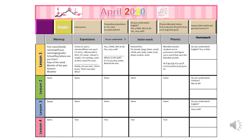At the top I have goals: expressions, prepositions or positions — in, on, next to, under, behind. Do you understand English? Yes, a little. Not at all. Yes, very well. Phonics blended letters: FL, SN, CR, QU, SL, TR, SH, SP, TH, CH, DR, SW, FR, ST, GL, CL, BR, GR, BL. Games: Old Maid, Sushi Go, War, Connect Four.